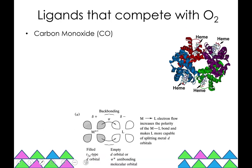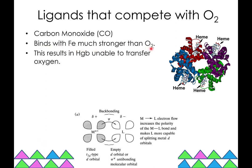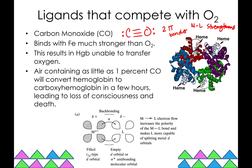Let's talk about ligands that compete with oxygen. Carbon monoxide binds to iron much stronger than oxygen because of pi backbonding. Oxygen has a double bond and can participate in backbonding a little, but carbon monoxide has a triple bond with two pi bonds, so it can participate in pi backbonding twice, strengthening the metal-ligand bond. This results in hemoglobin being unable to transfer oxygen. Air containing as little as 1% carbon monoxide will convert hemoglobin to carboxyhemoglobin in just a few hours, which can lead to loss of consciousness and death.